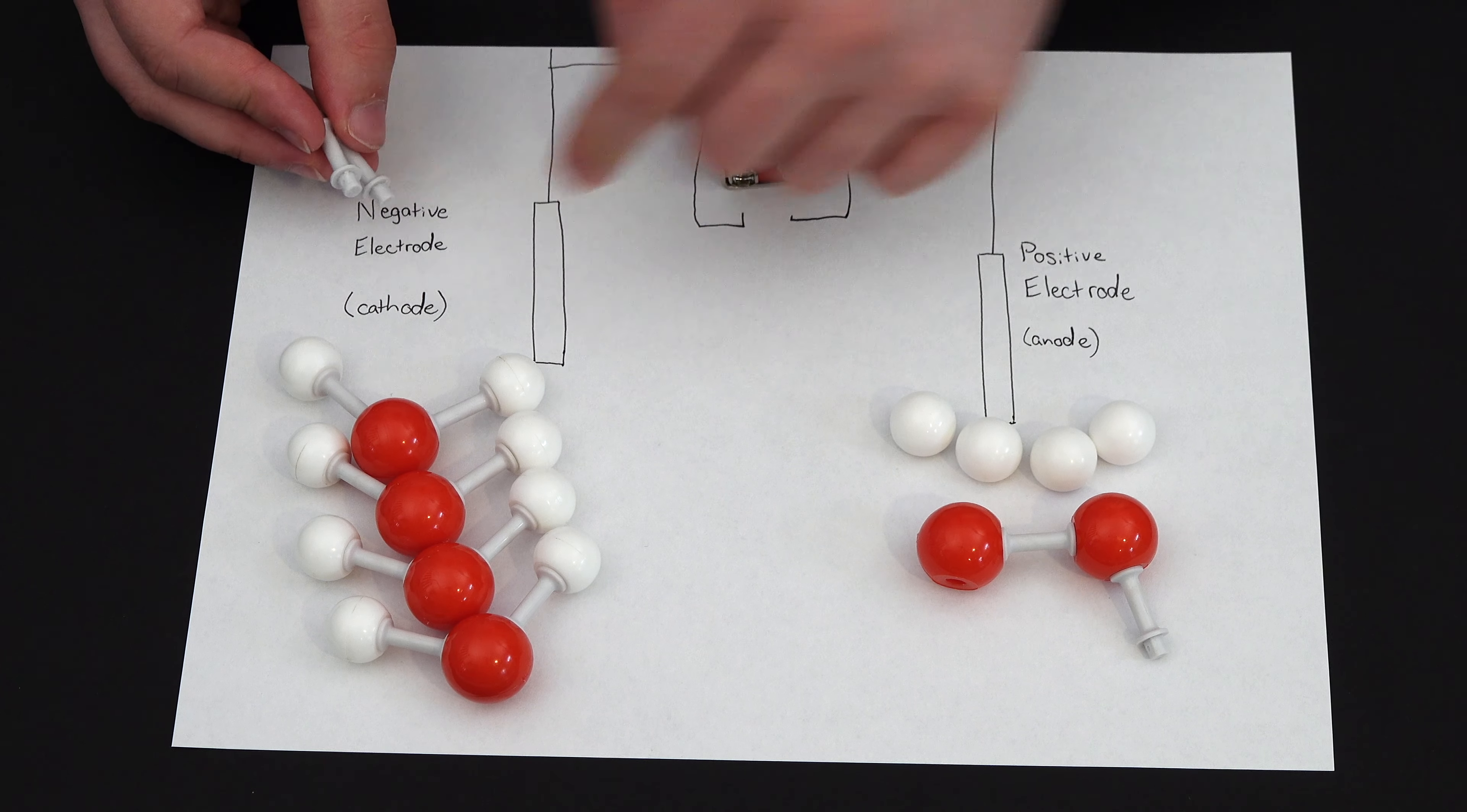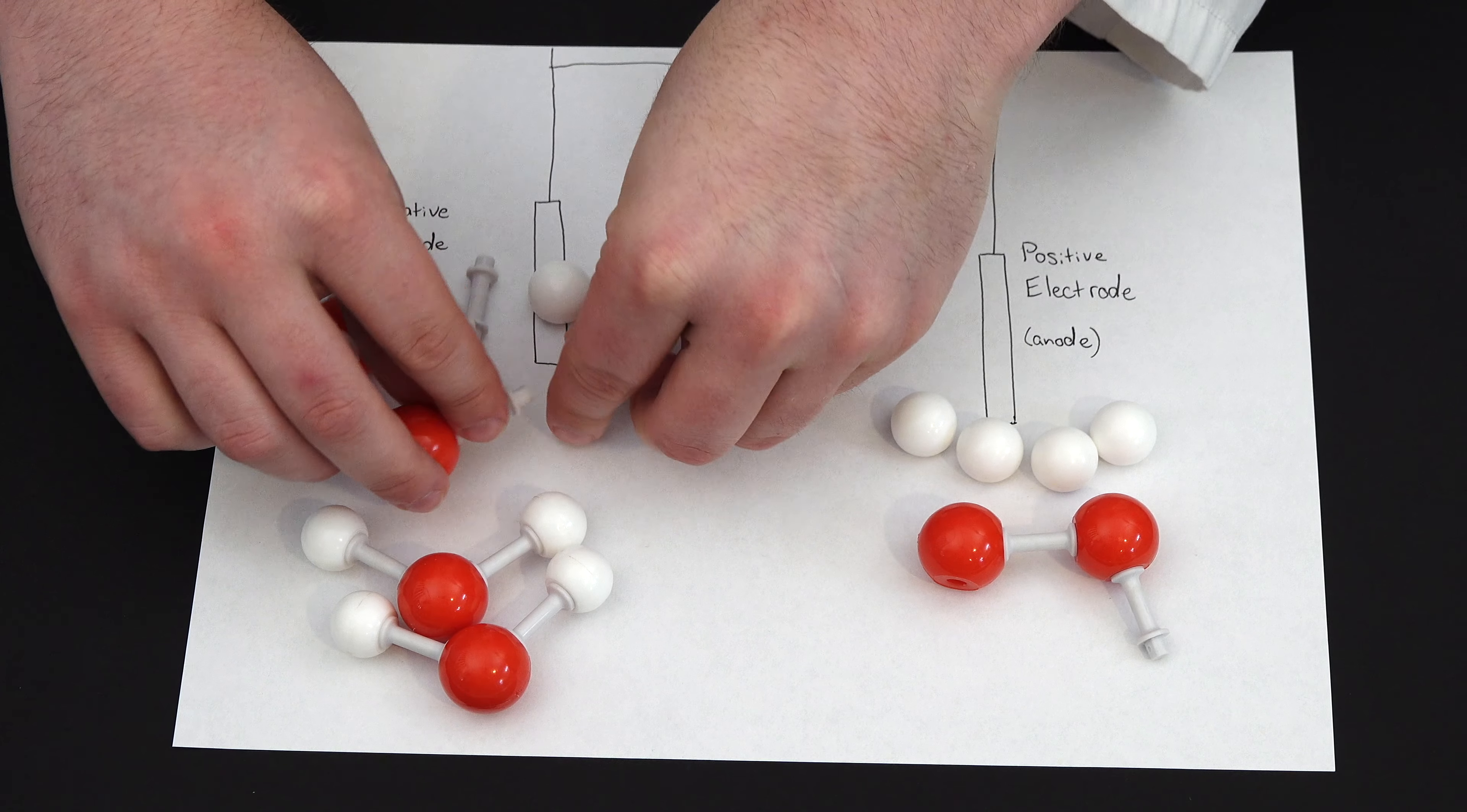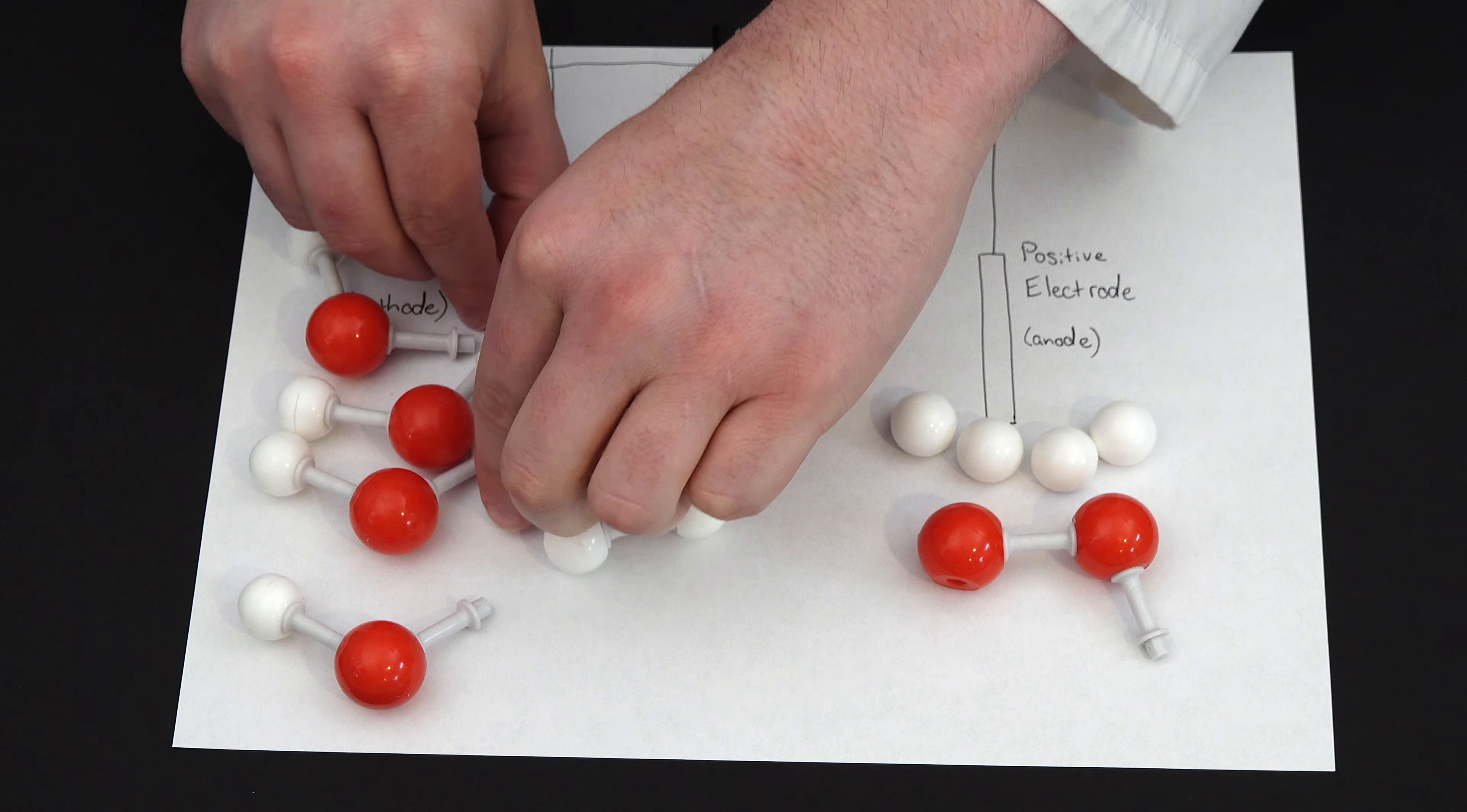So since the electrons just kind of get bumped up a little bit, at the exact same time this is happening over here, on the negative end, we have four electrons from our electrode come down to the four water molecules here, and each water molecule will have one hydrogen ion removed.